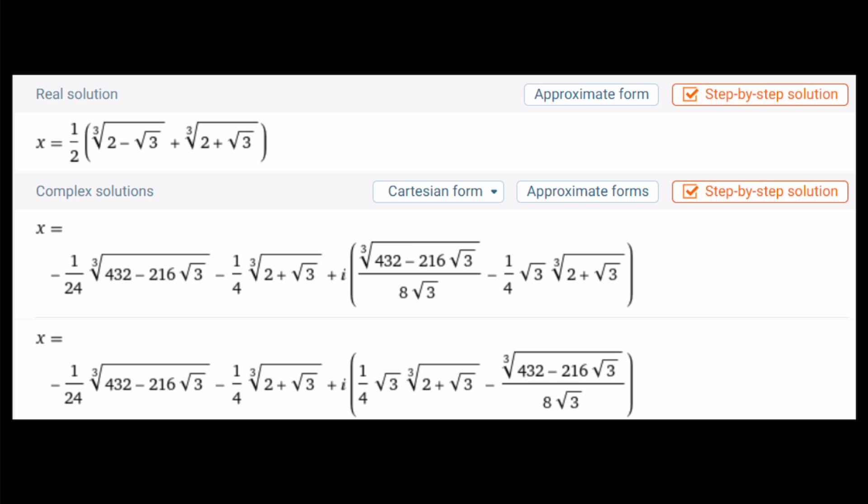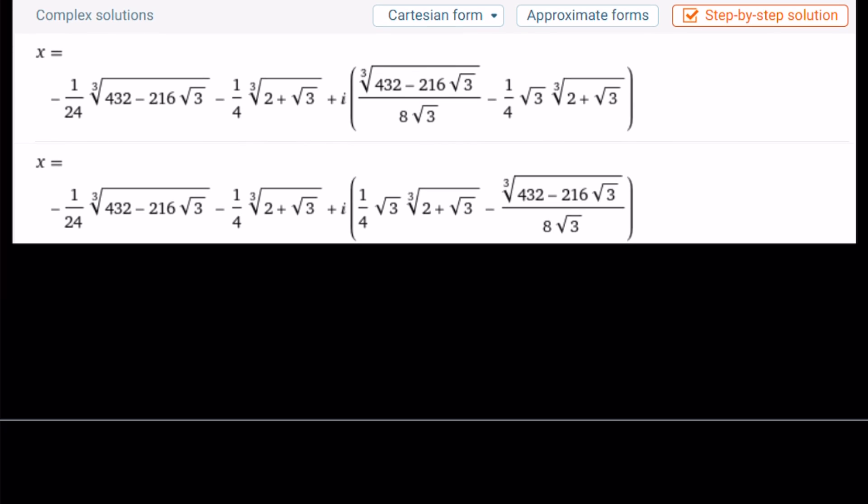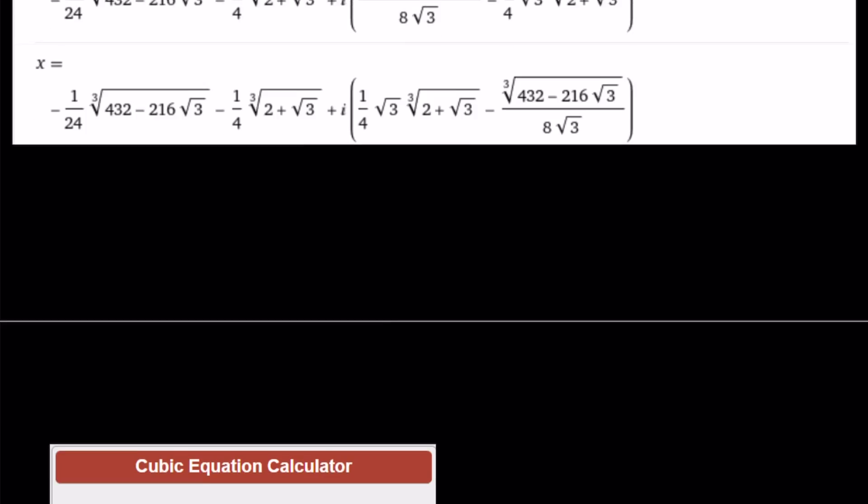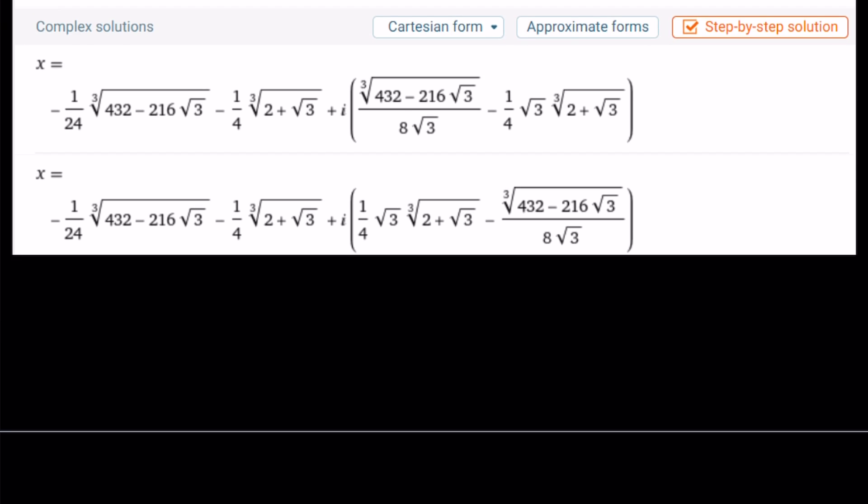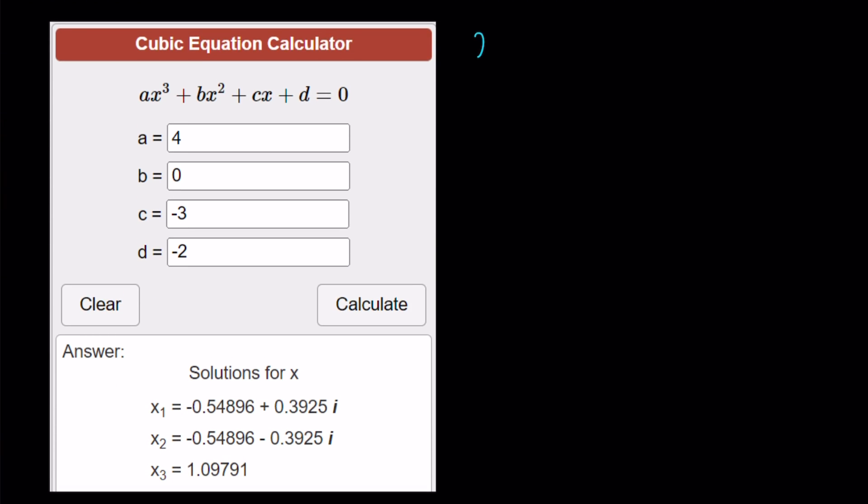So here's the real solution. As you can see, pretty much the same thing, but they wrote the minus 1 first. I don't know why. And here's the other two solutions that are complex in exact form. If you click approximate forms, then you'll get the approximate solutions. But on the graph, I'm going to go ahead and show you what the exact solutions are. Also, cubic equation calculator gives us the solutions like this. But before we move any further to the graph, let's go ahead and talk about the second method.